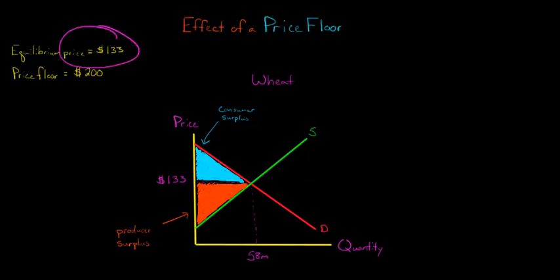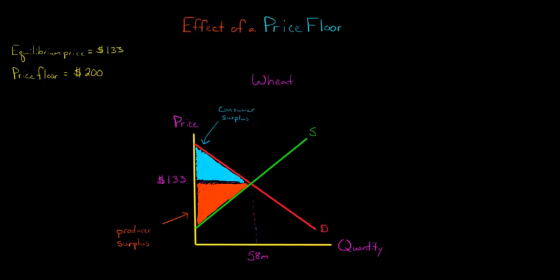The equilibrium price is $133 per ton of wheat, and we have 58 million tons of wheat that are produced and consumed. Here's our equilibrium point right here, and again the equilibrium price of wheat is $133 per ton.